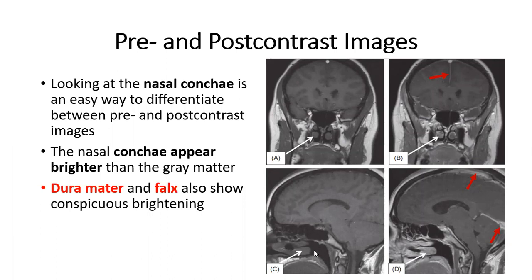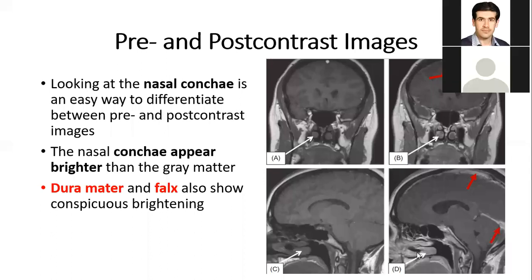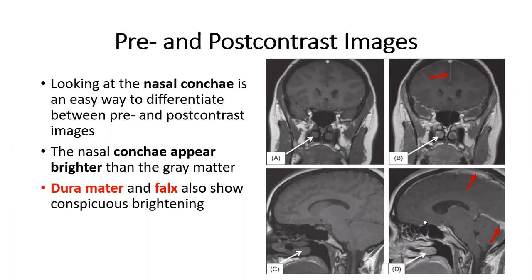Here in this image, this is the nasal concha — it is dark just like the gray matter, while here after infusion it is bright. Also, the calvus area — in Arabic, al-monhadar — will also be bright after gadolinium infusion.